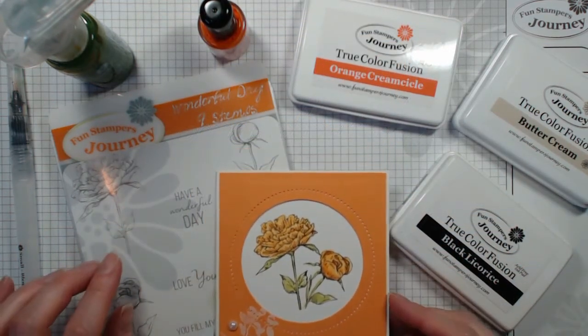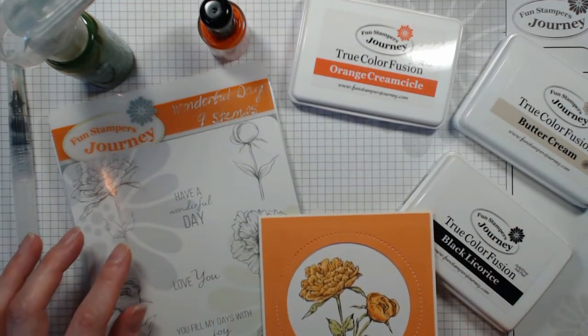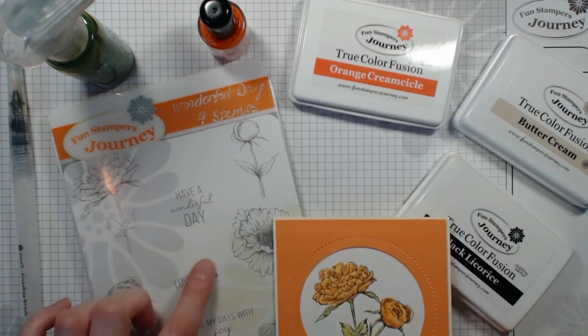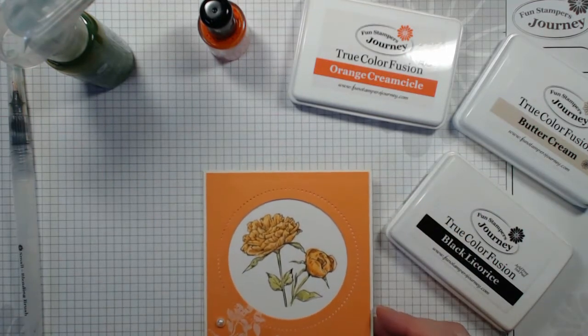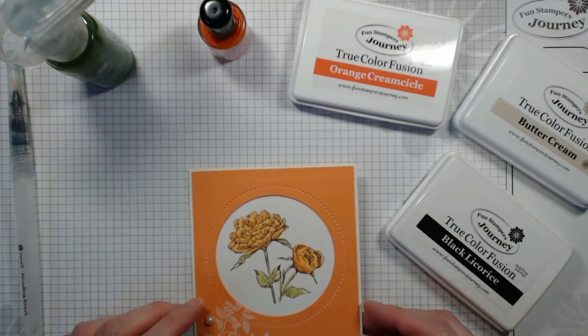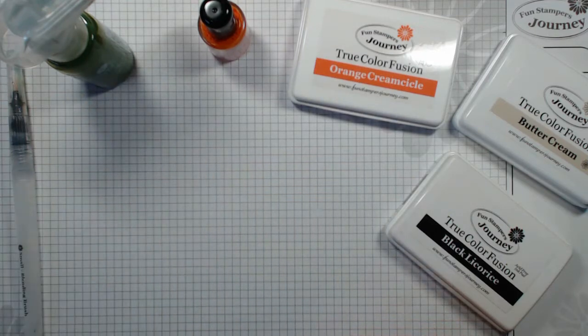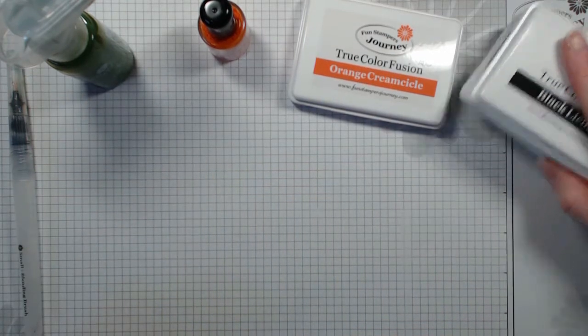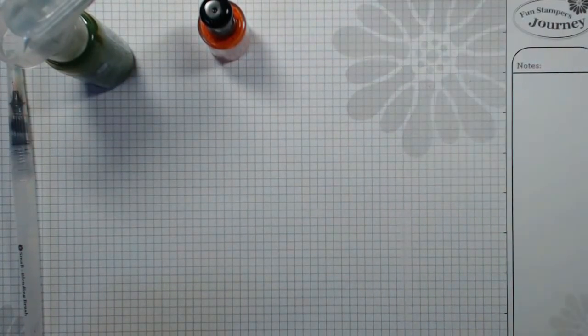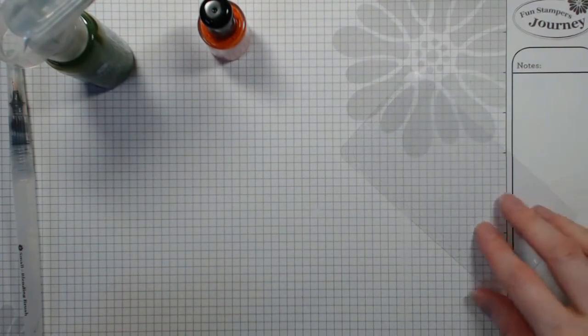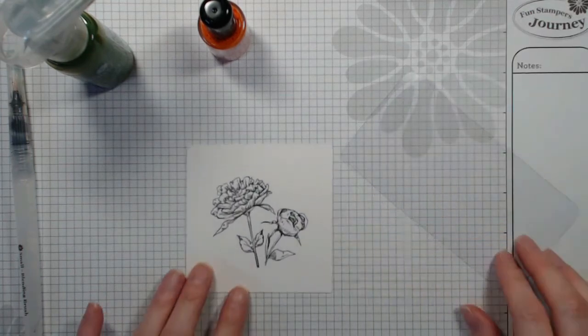I made it using two of the stamps from Fun Stampers Journey set called Wonderful Day, and I stamped it onto some color splash paper. You'll find that I have a lot of stuff all prepped and ready to go because I just really want to focus on the watercolor part.